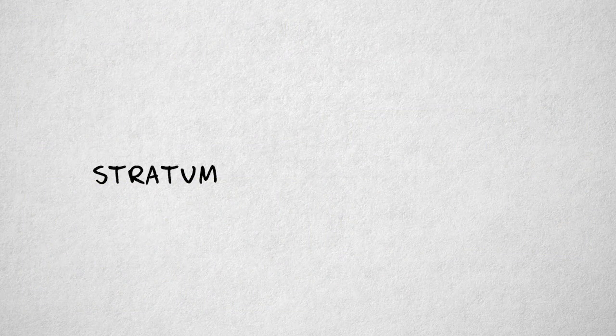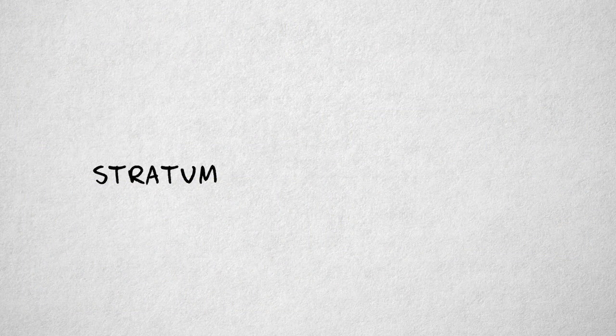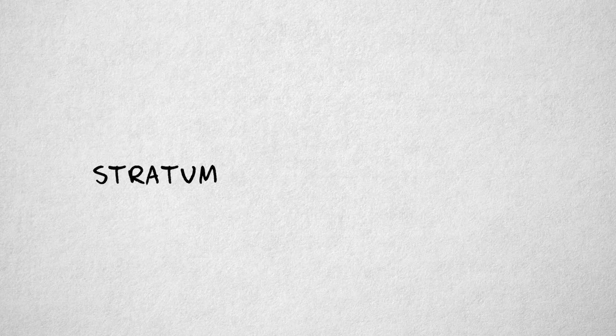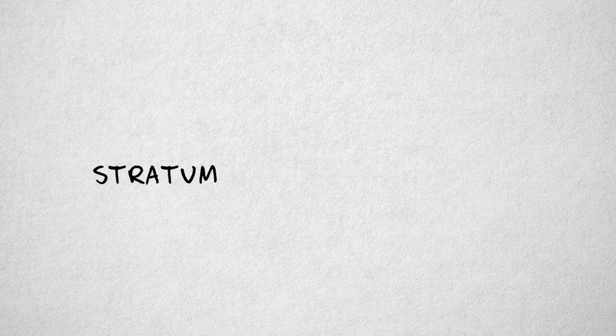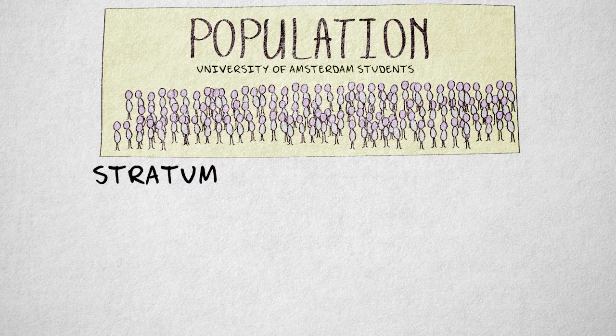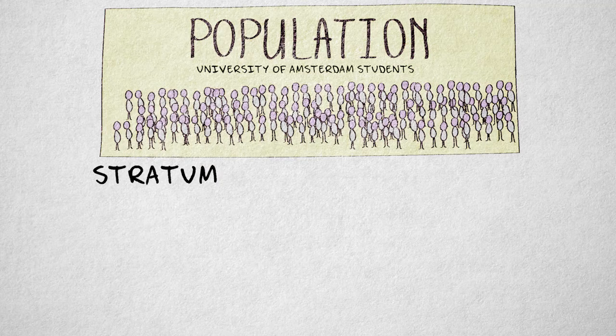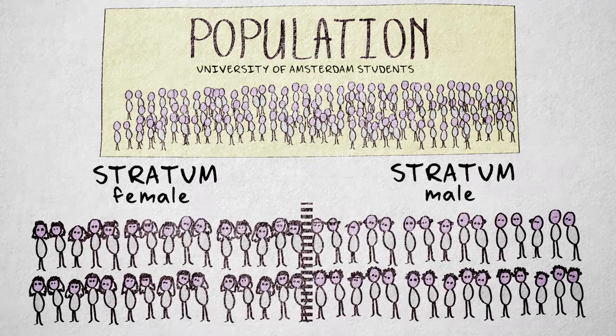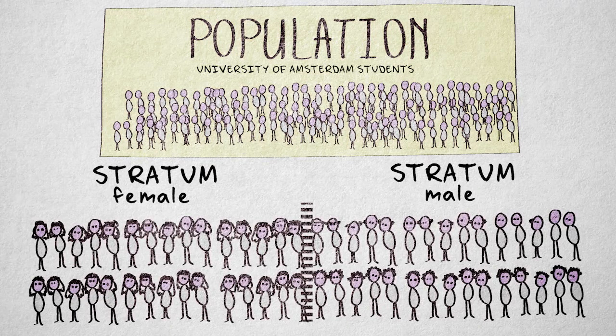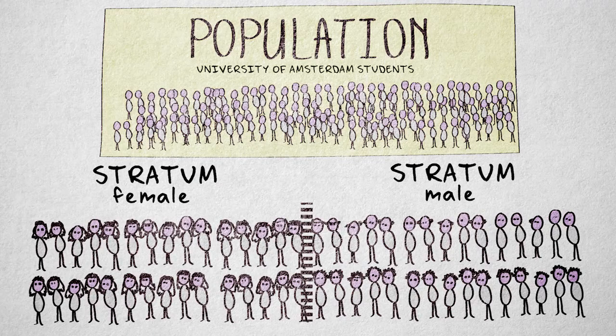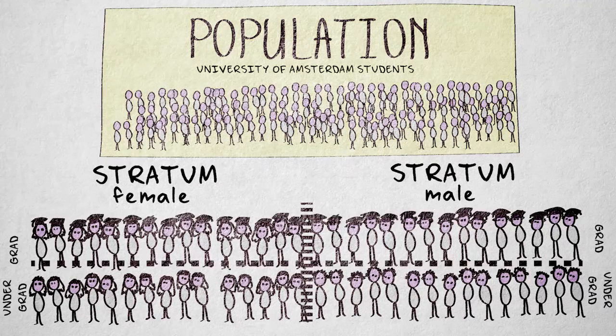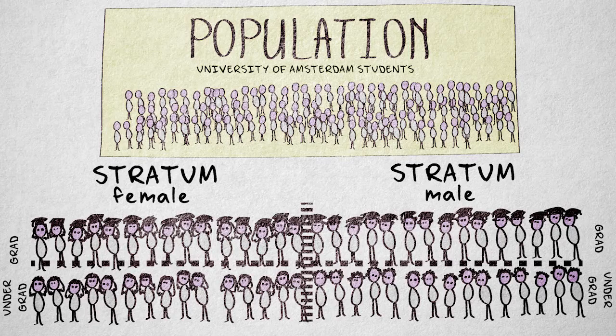A stratum is a subset of elements from the population that share a characteristic. In the population of currently enrolled students from the University of Amsterdam, we can distinguish a female and a male stratum, for example. Of course, we can identify many different strata that may overlap. For example, male and female undergraduate and graduate students.